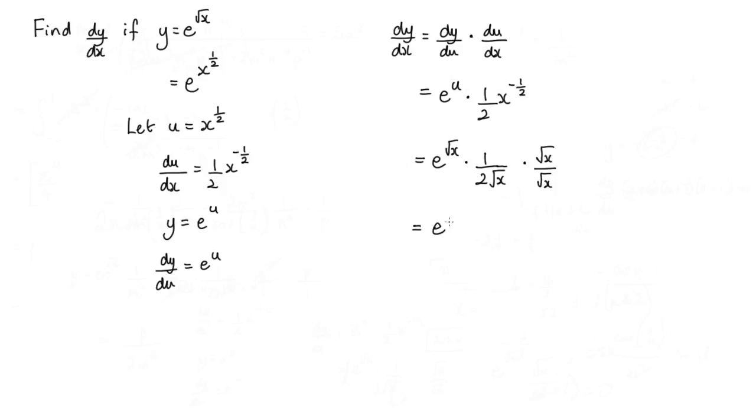Now by doing that, we get e to the root x, times root x. And that is all over, we've got the 2 there. And root x times root x, that is just x. And there is our final answer.